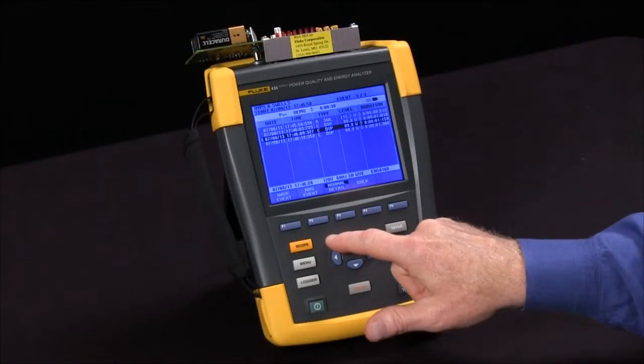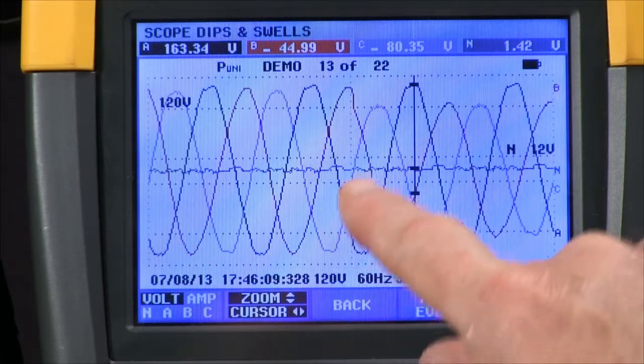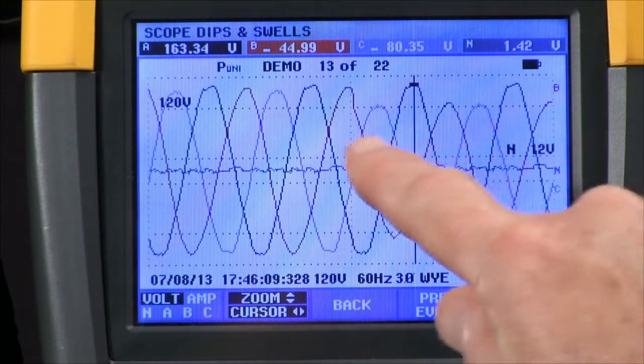For even more detail, hit the wave event button and you see the actual waveforms. You can see the actual dips that occurred on the B and C phase.